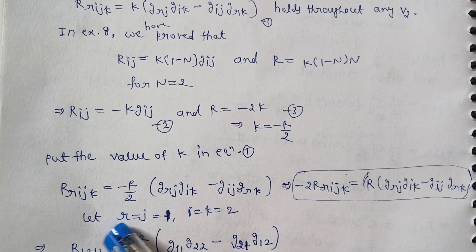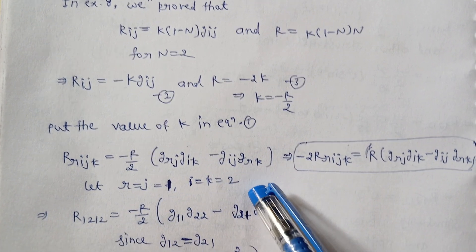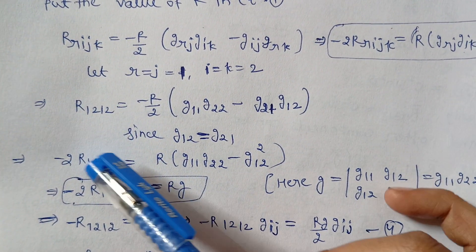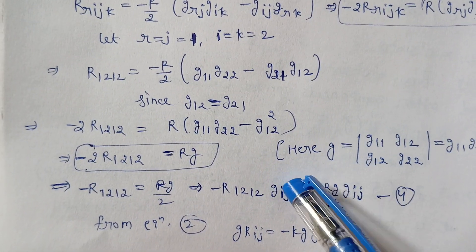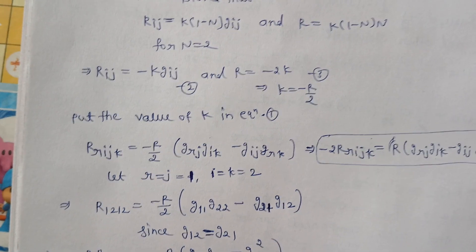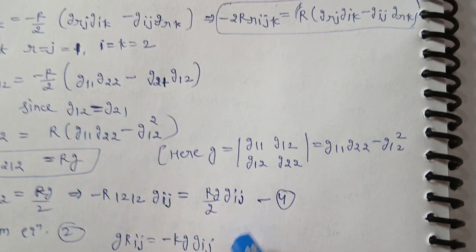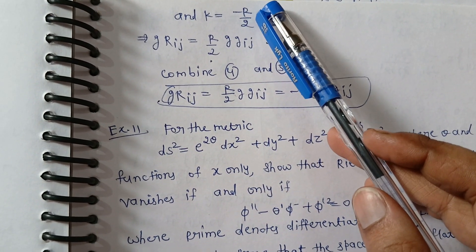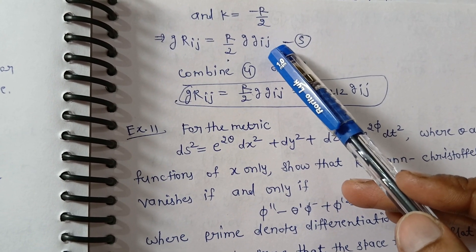We use the formula with I and J equal to 1 and 2 respectively. Substituting r, j equal to 1 and i, k equal to 2, we see that both sides represent the determinant of g. We cross-multiply and write the resulting formula. Multiplying both sides by g, we substitute the value of g and obtain the final result for example 10.